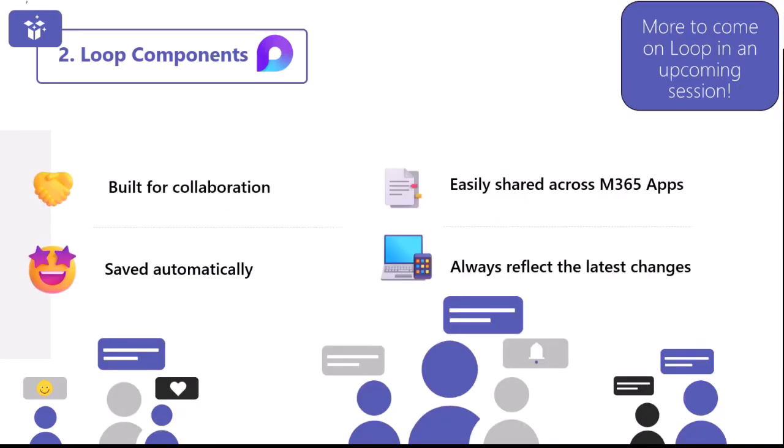If you haven't seen Loop before, hopefully you're really excited by that. Loop Components are essentially fluid components that are shared with groups of people to help co-create, and they are built for collaboration. When you send a Loop Component, everyone in your chat can edit it inline, and you see those changes instantly. You can collaborate right inside that chat message, and as your colleagues are typing, you will see that in real time as well. They are automatically saved to your OneDrive, which means you can find them from office.com in addition to Teams. I suggest giving them an easy-to-remember title, as this is also the file name.